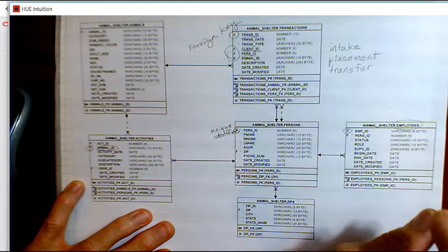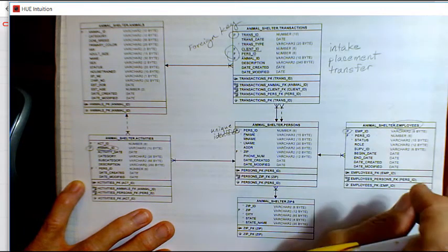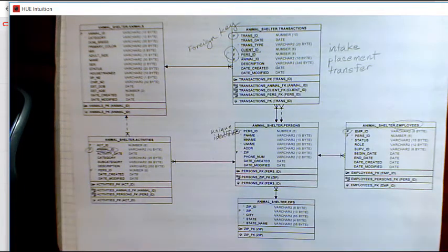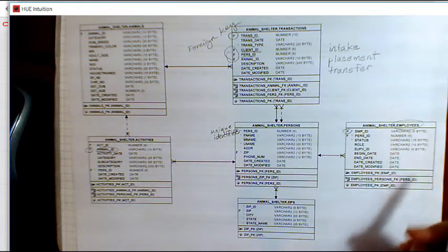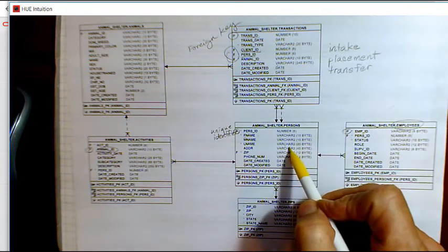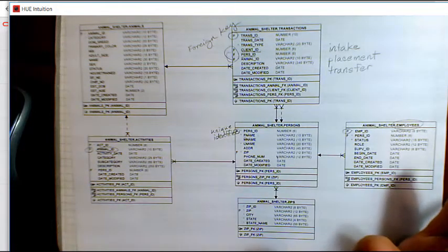If data is redundant, then over time the quality of the data deteriorates because we might update the address for our employee who had adopted an animal, and we didn't update it over in the client table.